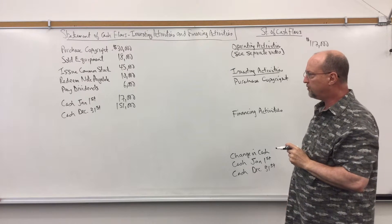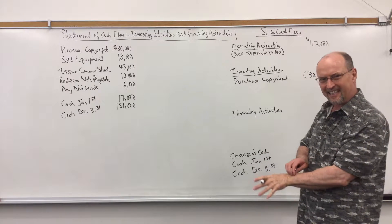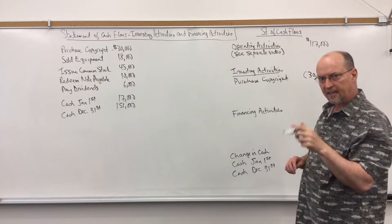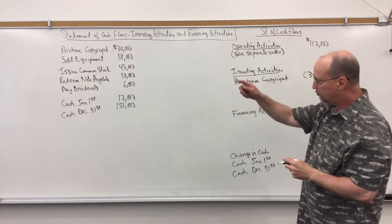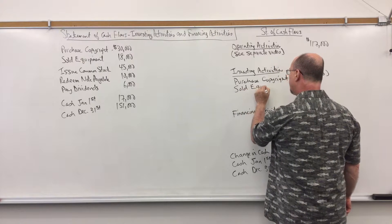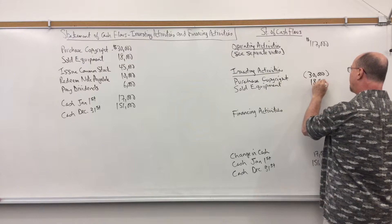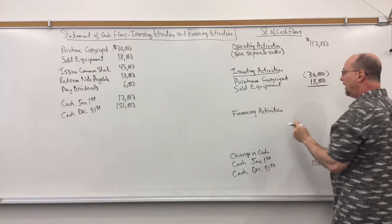And then we sold a piece of equipment and again we don't need to worry about the gain or loss on sale in the investing activity section. Again that would be the operating activity section. Sold equipment for $18,000 so I'll just put sold equipment $18,000 and that is a source of cash.